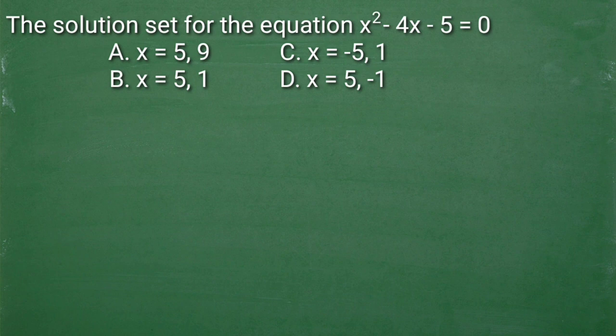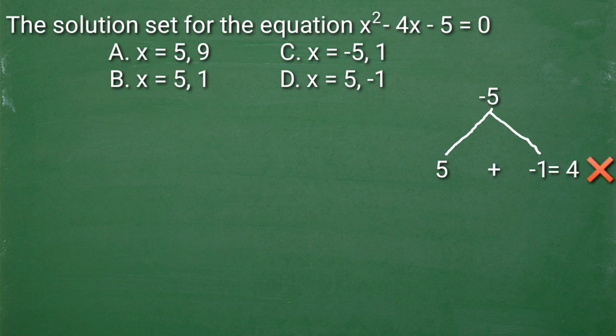Same process lang ulit. Let us solve this by factoring. Isip lang ulit tayo ng two numbers na kapag minultiply natin ang result ay negative 5 at kapag pinag-add natin ang result negative 4. So ano kaya yung two numbers na yun? I-try natin ang positive 5 and negative 1. Kapag pinag-multiply natin ang result negative 5. So pag pinag-add natin, 5 plus negative 1 is equal to positive 4. Ibig sabihin hindi ito.